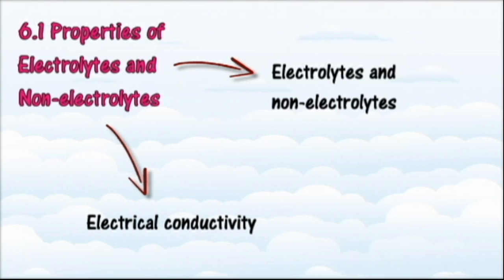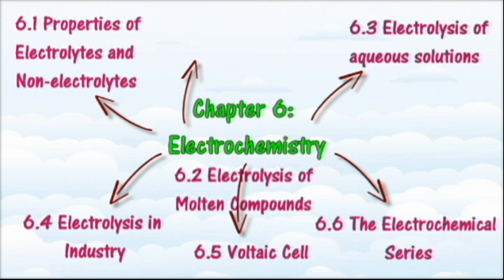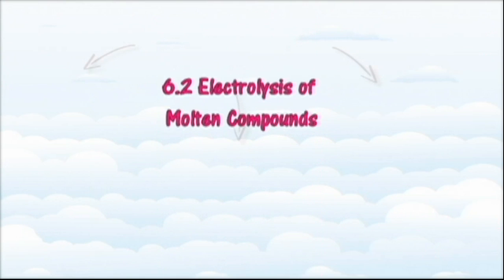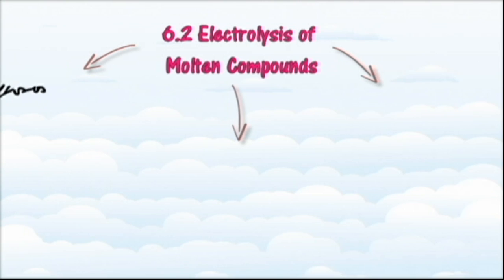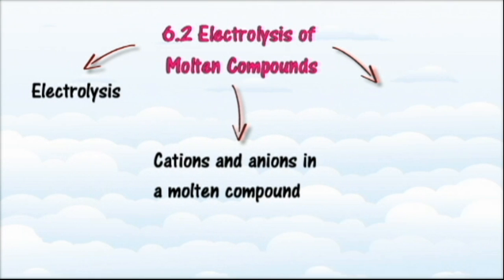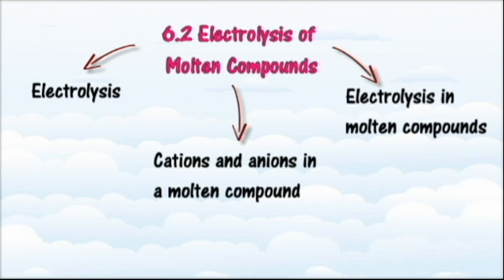In section 6.2 we will learn about electrolysis of molten compounds. At the end of this section you should be able to describe electrolysis in an electrolytic cell, identify cations and anions in a molten compound, describe evidence for the existence of ions held in a lattice in solid state but moving freely in molten state, describe electrolysis of a molten compound, write half equations for the discharge of ions at the anode and cathode, and predict products of the electrolysis of molten compounds.